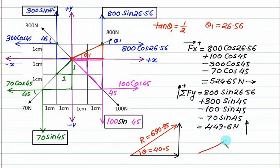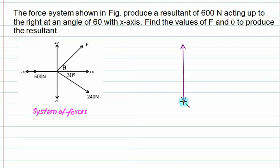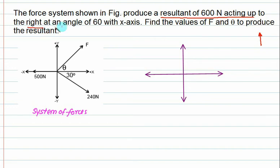Now we check the third problem. A force system is shown in the figure with three forces: force F, 240 N, and 500 N. If we replace this entire system with its resultant, the resultant force is 600 N acting upward and to the right, making a 60-degree angle with the x axis. Acting up and to the right — this direction is confirmed.